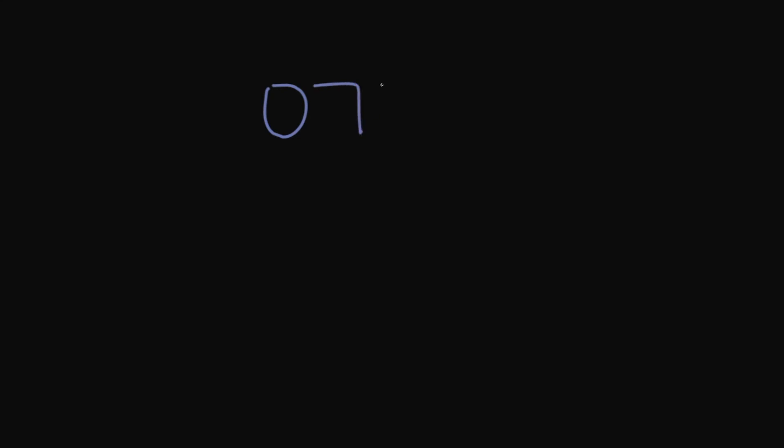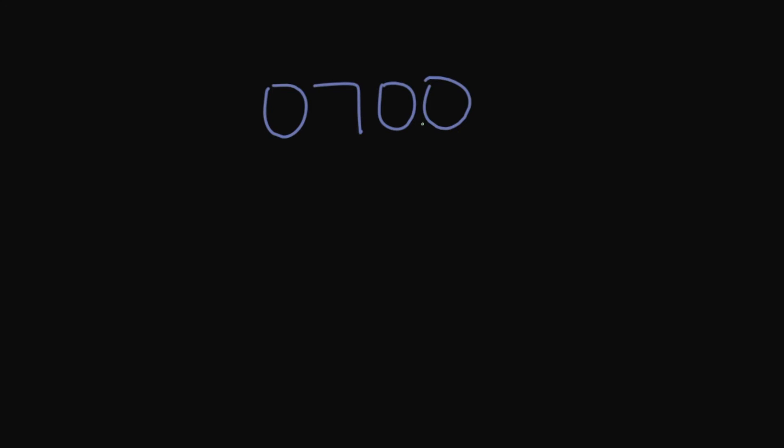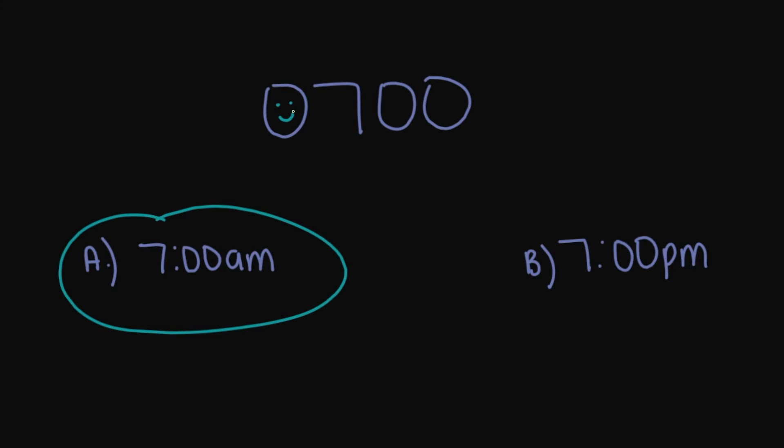So let's look at some examples. Let's say we had military time 0700 hours and we need to convert this into regular time. Is it going to be A, 7 a.m. or B, 7 p.m.? Regular time is going to convert to 7 a.m. because we have our zero right in front of the hour number.